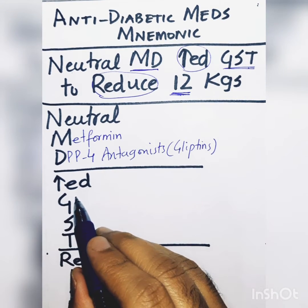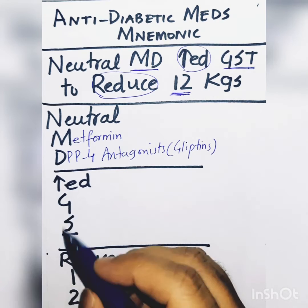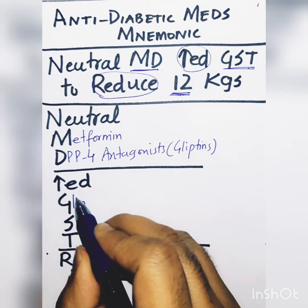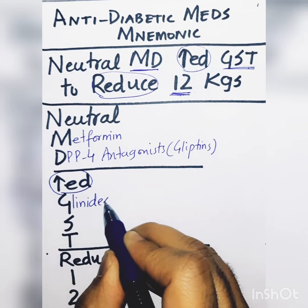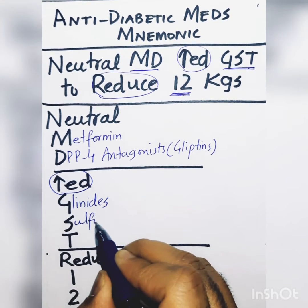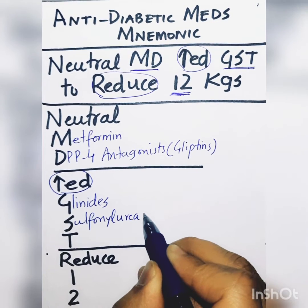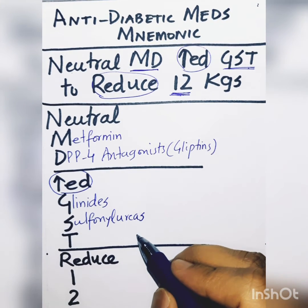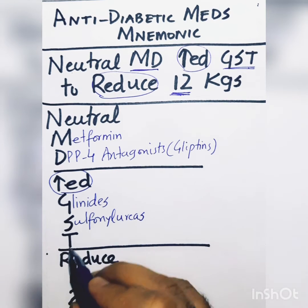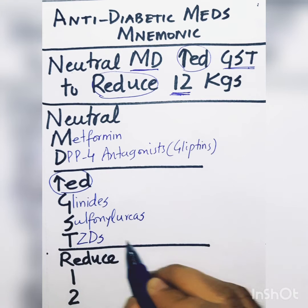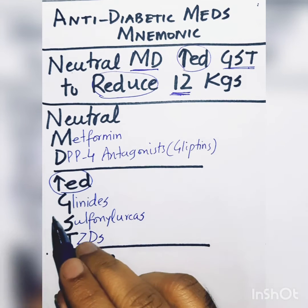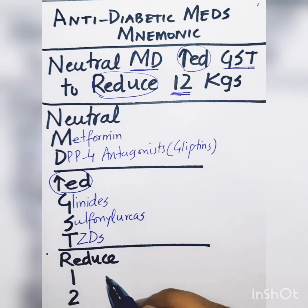The anti-diabetic medications that increase weight are: glinides, sulfonylureas (such as glimepiride and gliclazide), and thiazolidinediones (such as pioglitazone). All three groups of these medications increase the weight.